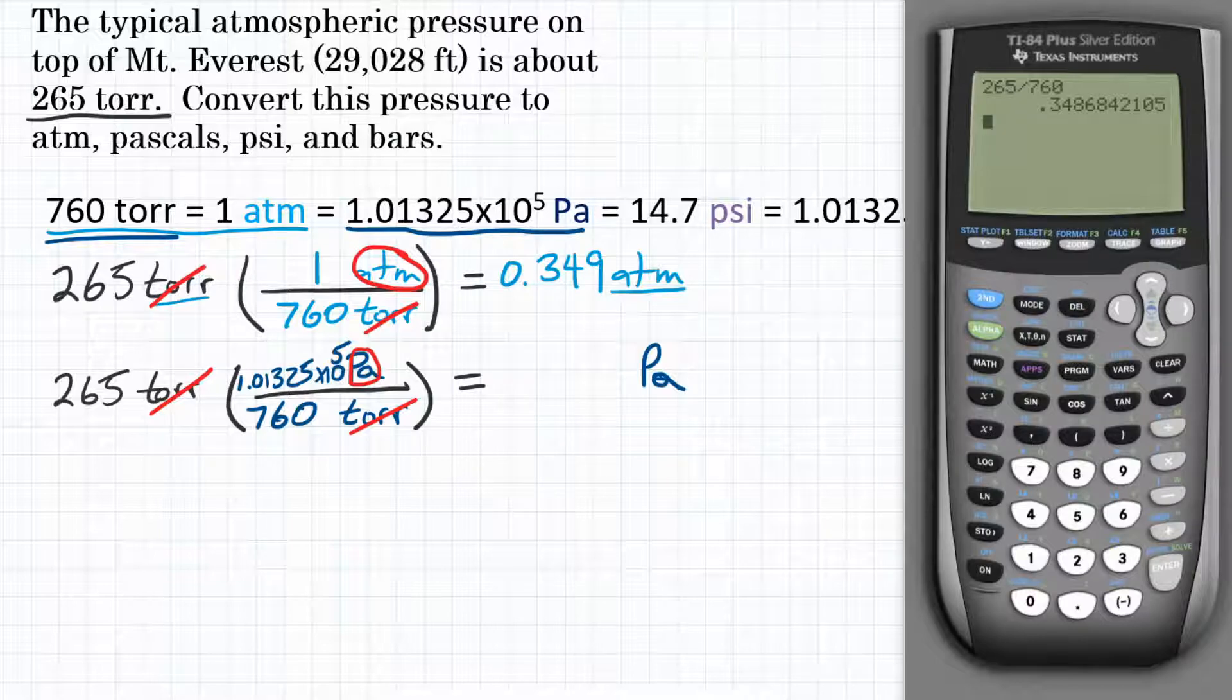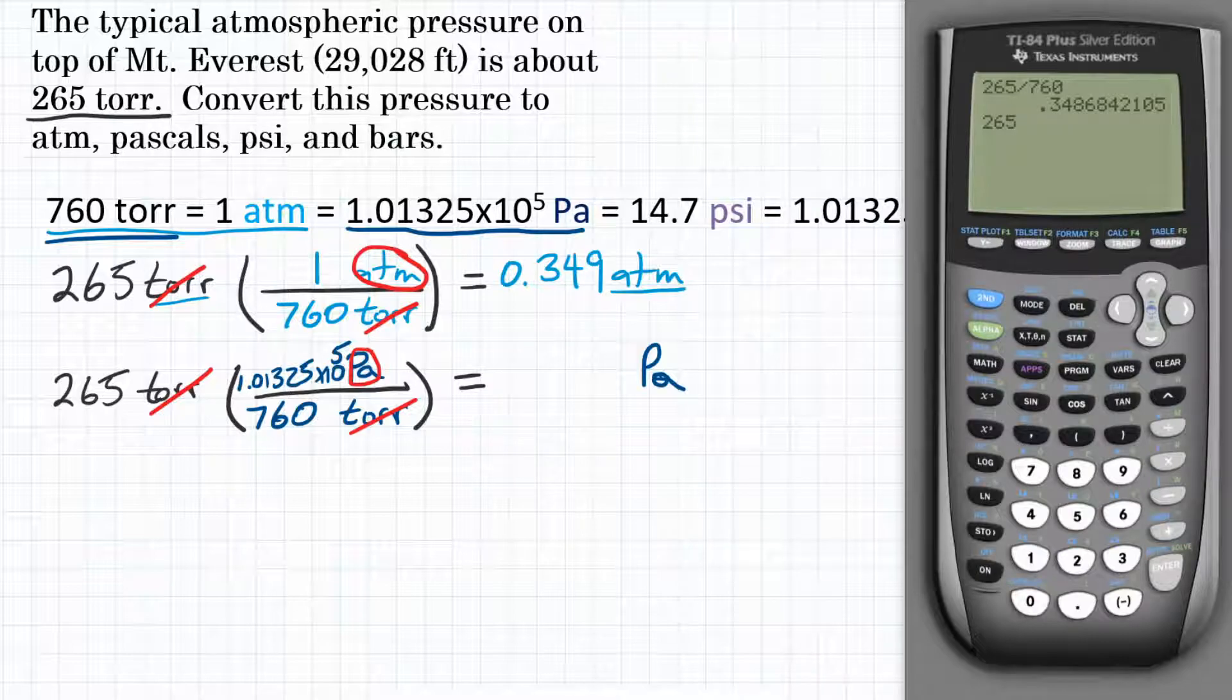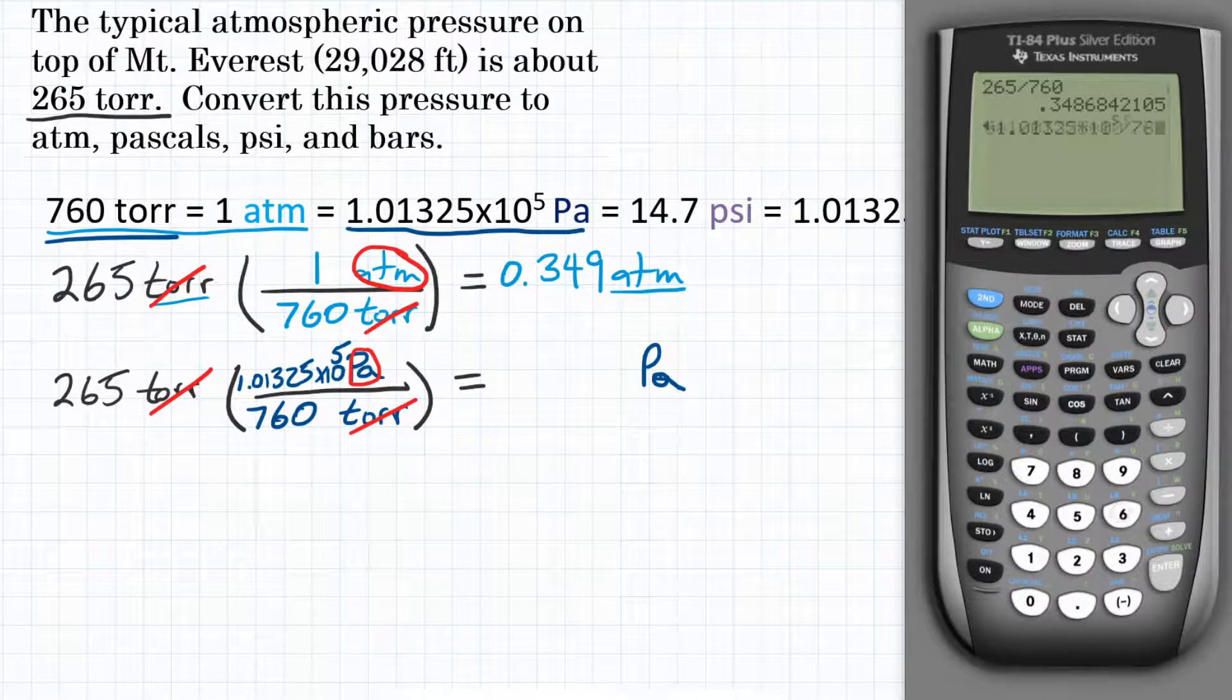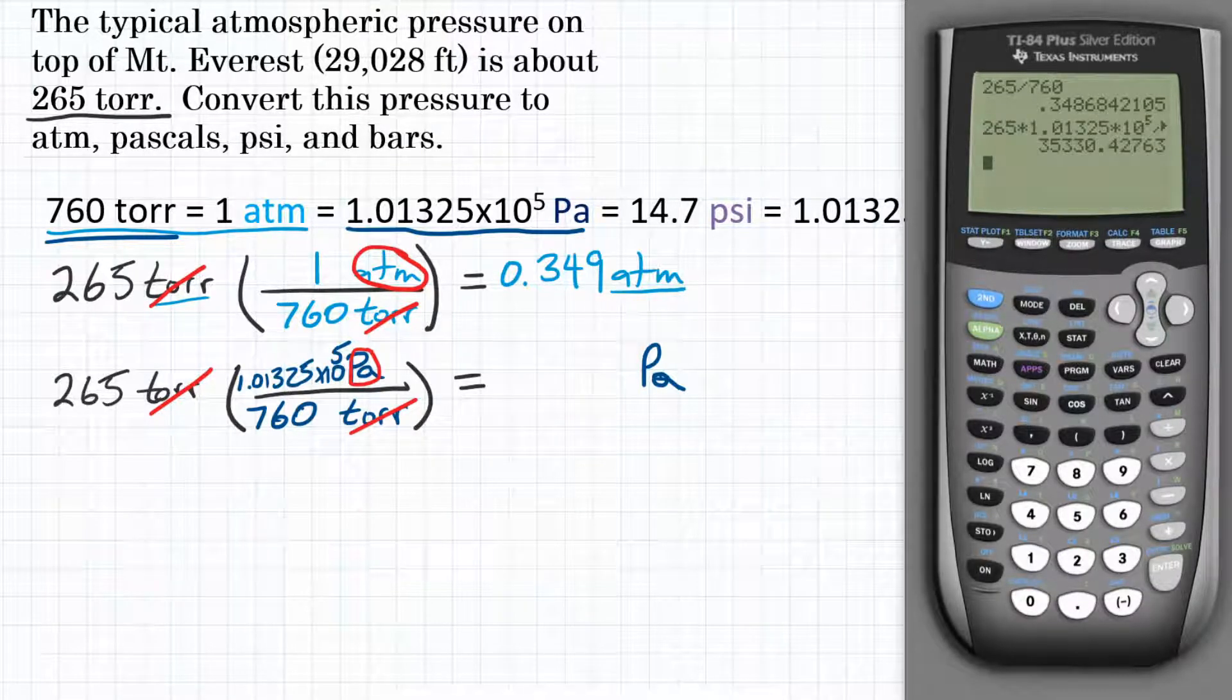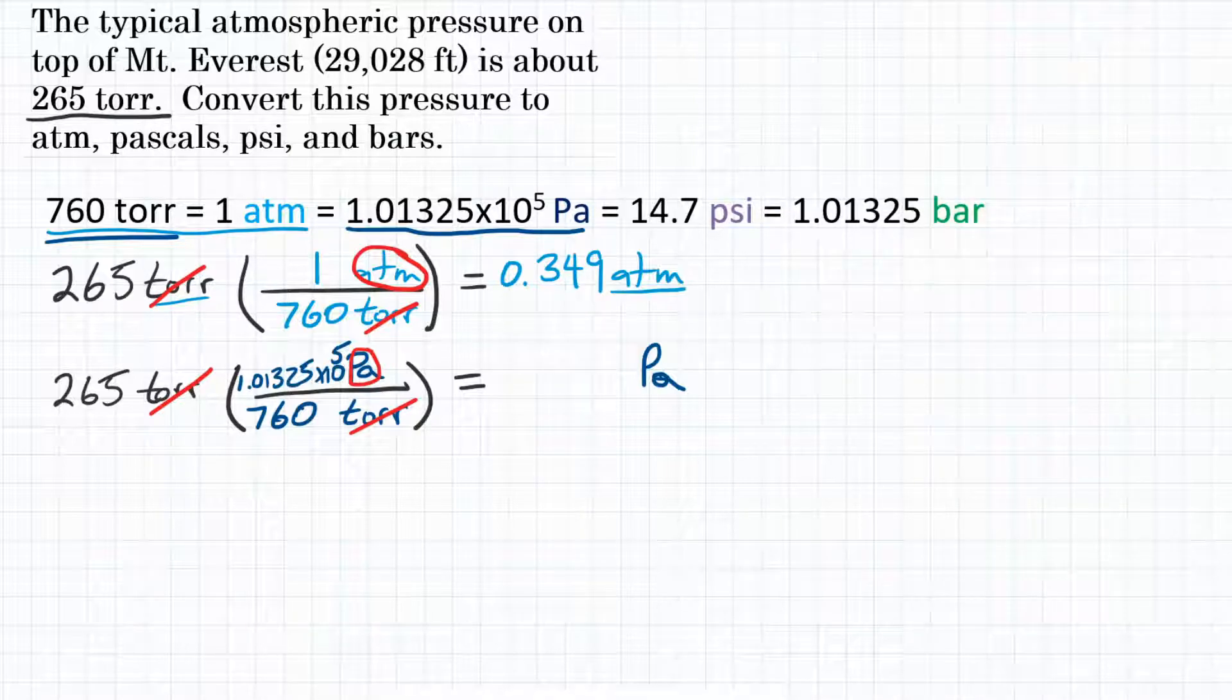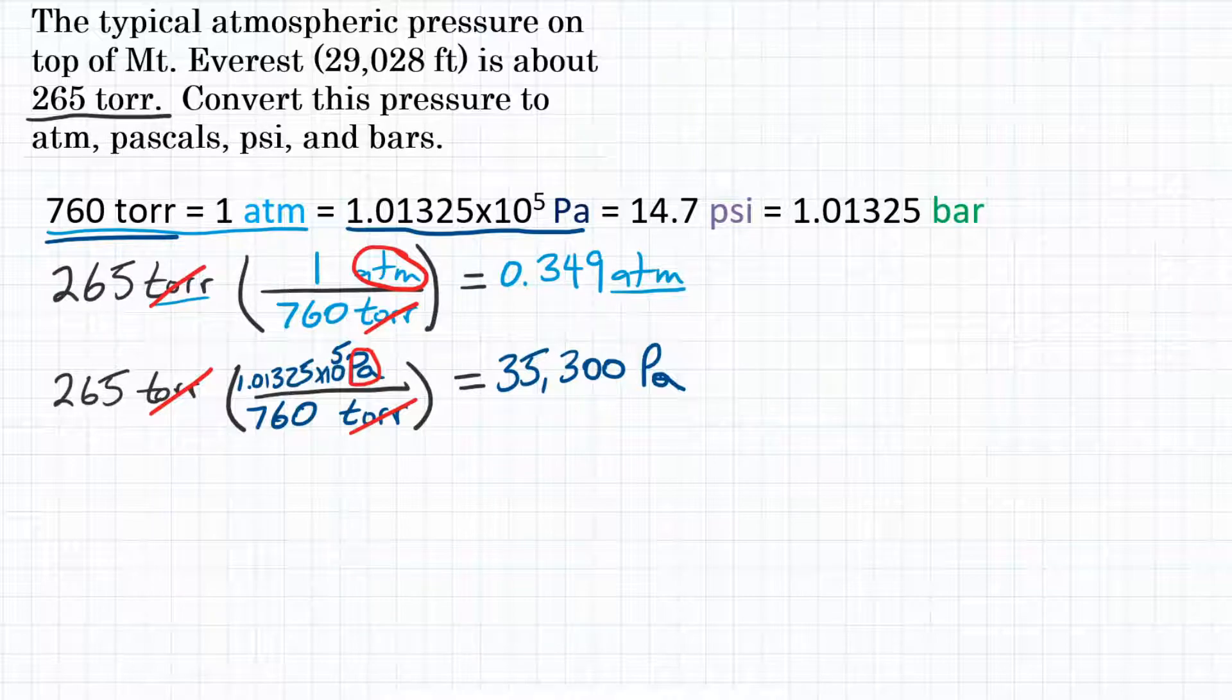Let's get our calculator. We are, again, starting with 265 multiplying by the top, dividing by the bottom of our conversion factor. So we will multiply by 1.01325 times 10 to the 5th pascals. Let's make sure you're off your exponent on your calculator. And then we will divide by 760, hit enter, and our calculator gives us this for an answer. Let's round to three significant figures, and that would be 35,300.